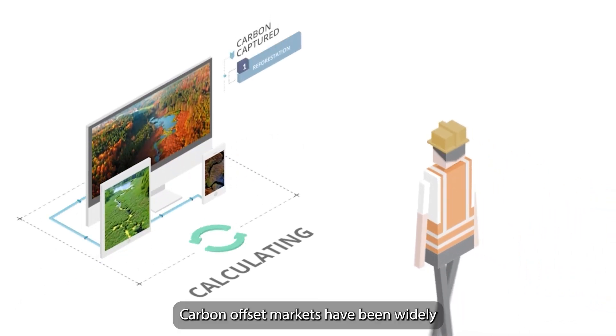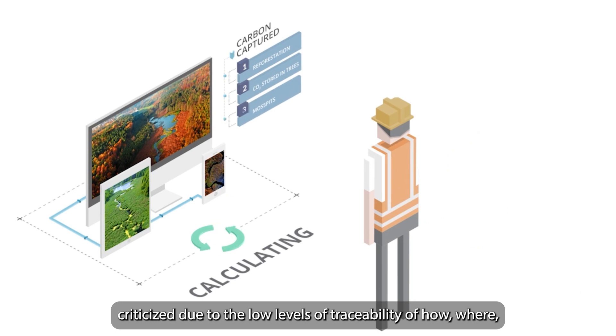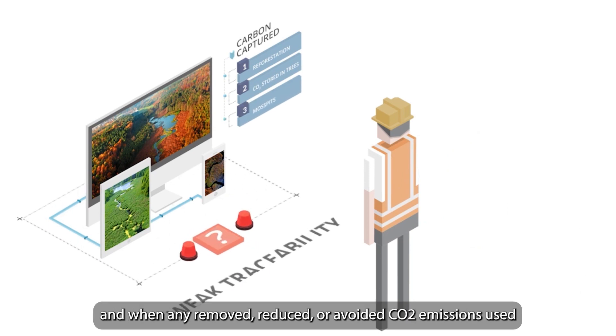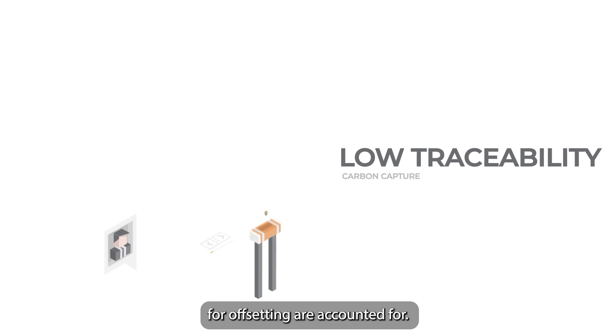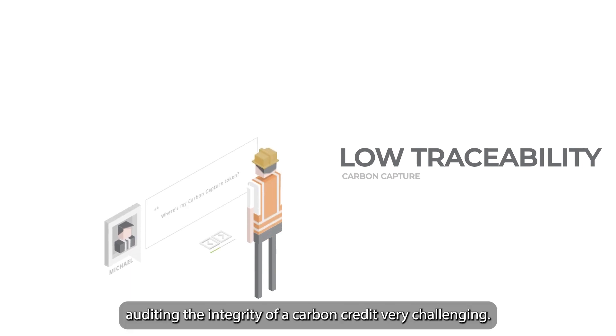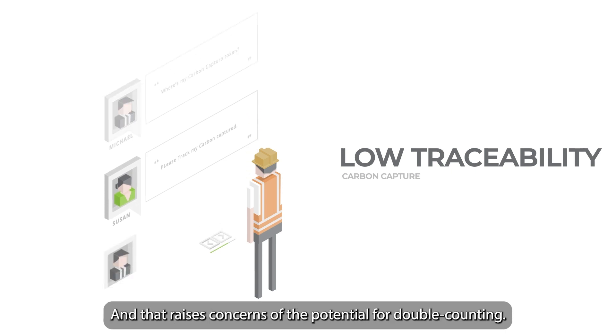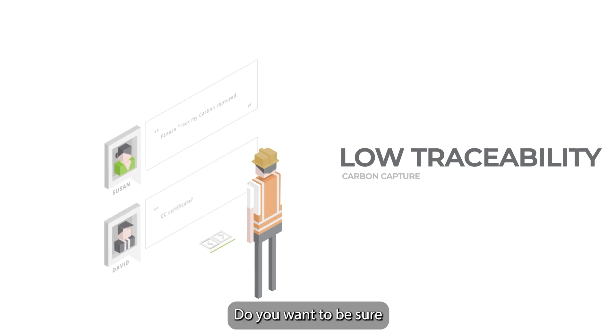Carbon offset markets have been widely criticized due to the low levels of traceability of how, where, and when any removed, reduced, or avoided CO2 emissions used for offsetting are accounted for. This weakness inevitably makes auditing the integrity of a carbon credit very challenging, and that raises concerns of the potential for double counting.